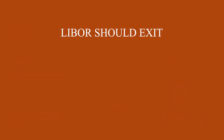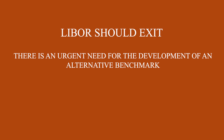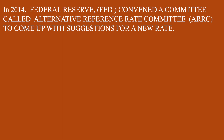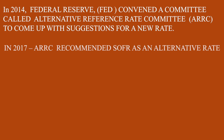LIBOR needed to exit. It was not an easy task because a lot of loans were benchmarked to LIBOR. In 2014, the Federal Reserve Board convened a committee called the Alternative Reference Rate Committee, that is ARRC, to come up with suggestions for a new rate. In 2017, ARRC recommended SOFR — Secured Overnight Financing Rate — as an alternative to LIBOR. In April 2018, the Federal Reserve started publishing SOFR.